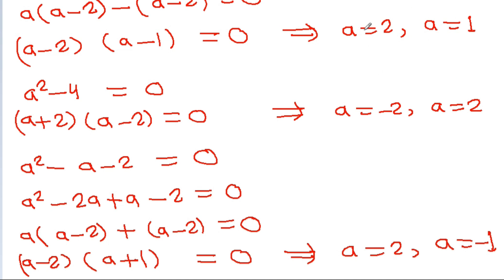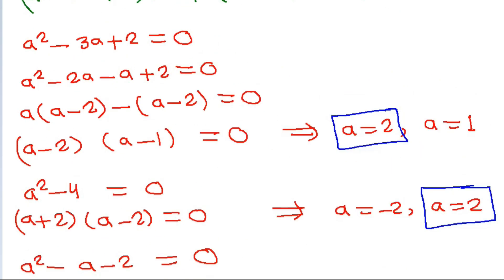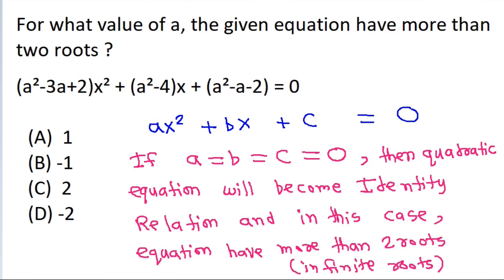So a = 2 is common in all three conditions. That means for a = 2, the given equation has more than two solutions. So the correct option is option C, which is 2.